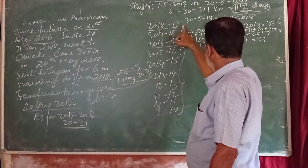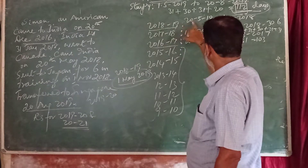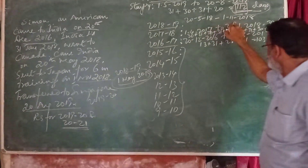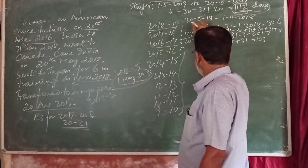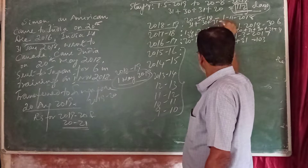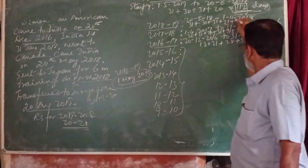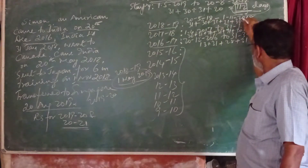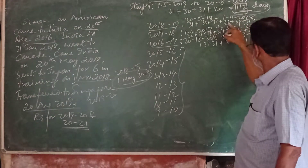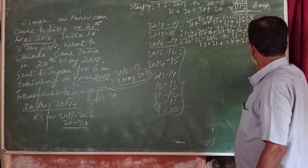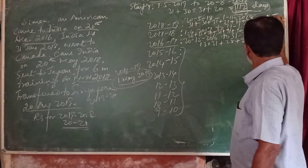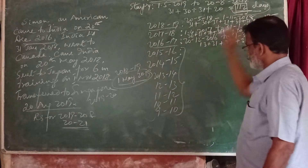During the previous year 2018-19, he was in India from 20th May 2018 to 1st November 2018. That means: May 11 days, June 30, July 31, August 31, September 30, October 31, and November 1. So the total number of days in 2018-19 is 185 days.